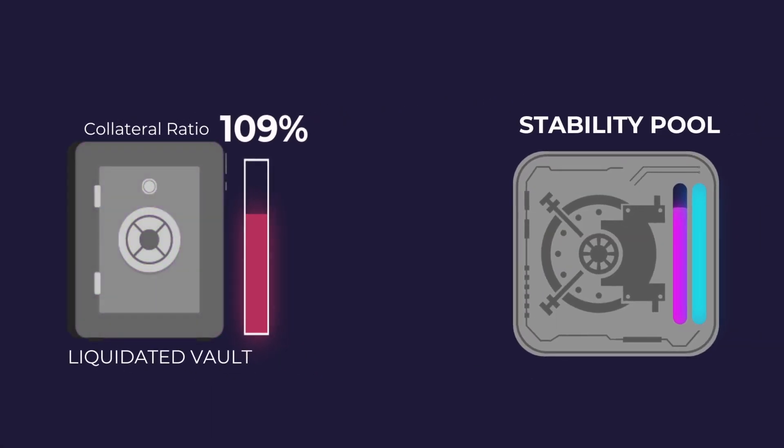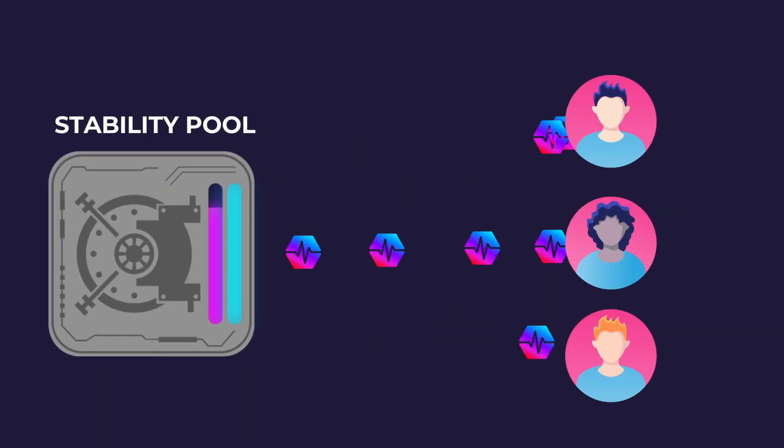So what's the benefit of doing that? Well, as a stability provider, you are supporting the health of the system and for doing so, you're rewarded in the protocol's native token LOAN. Plus, you'll also receive PLS when liquidations happen. This is because by depositing your USDL into the stability pool, you're essentially agreeing to buy PLS at a discount from vaults that are liquidated. When a liquidation occurs, USDL is taken from the stability pool and used to pay off the undercollateralized loan, and then the collateral in that vault — the PLS — is distributed proportionally amongst the stability providers. For example, if you own 10% of the stability pool, then you will receive 10% of the PLS from liquidations whenever they occur.